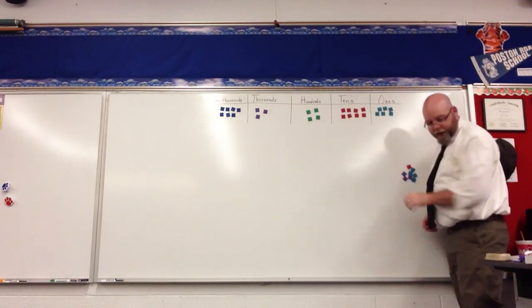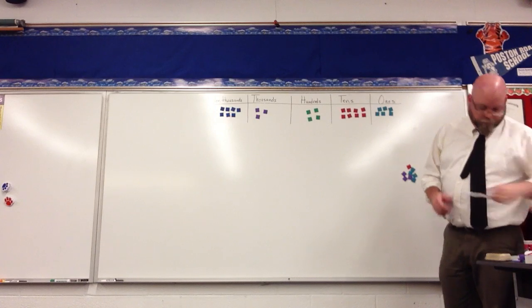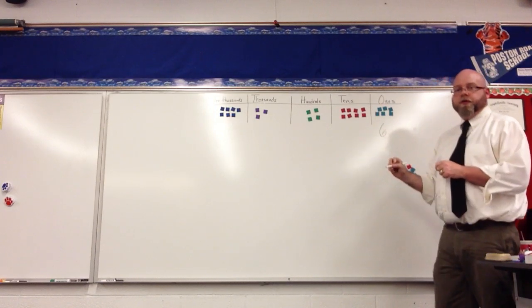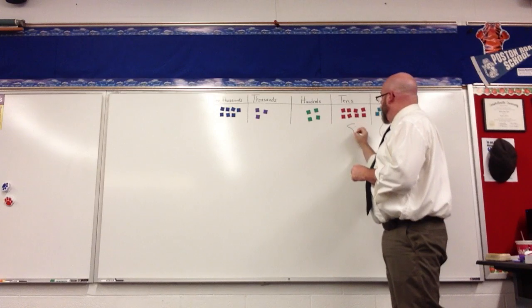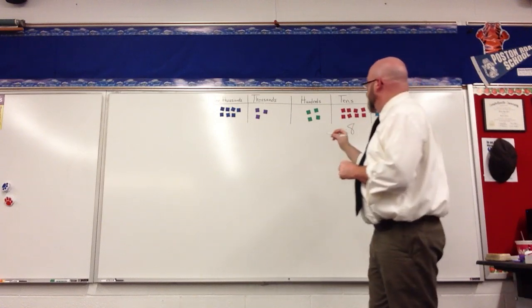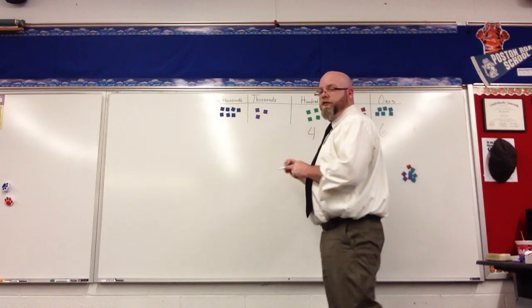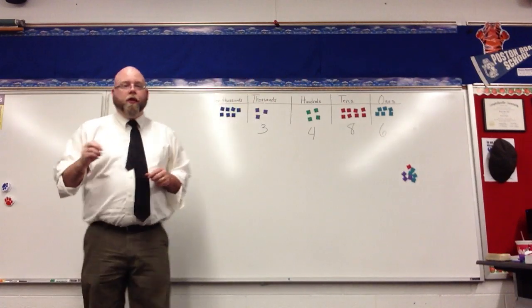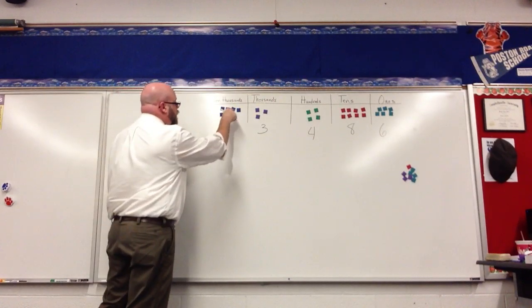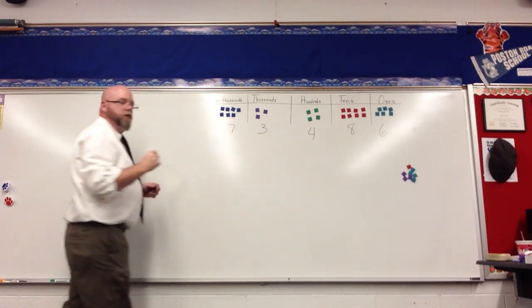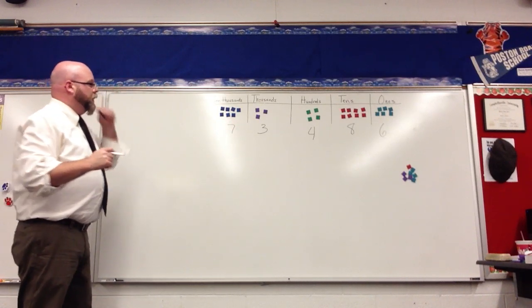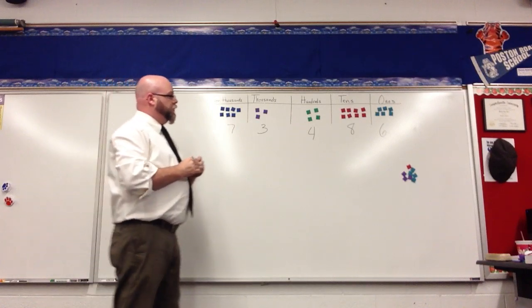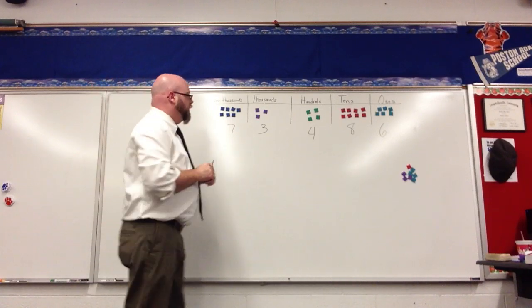Well, I have 6 ones, 8 tens, 4 hundreds, 3 thousands, and 7 ten thousands. So this number would be read 73,486.